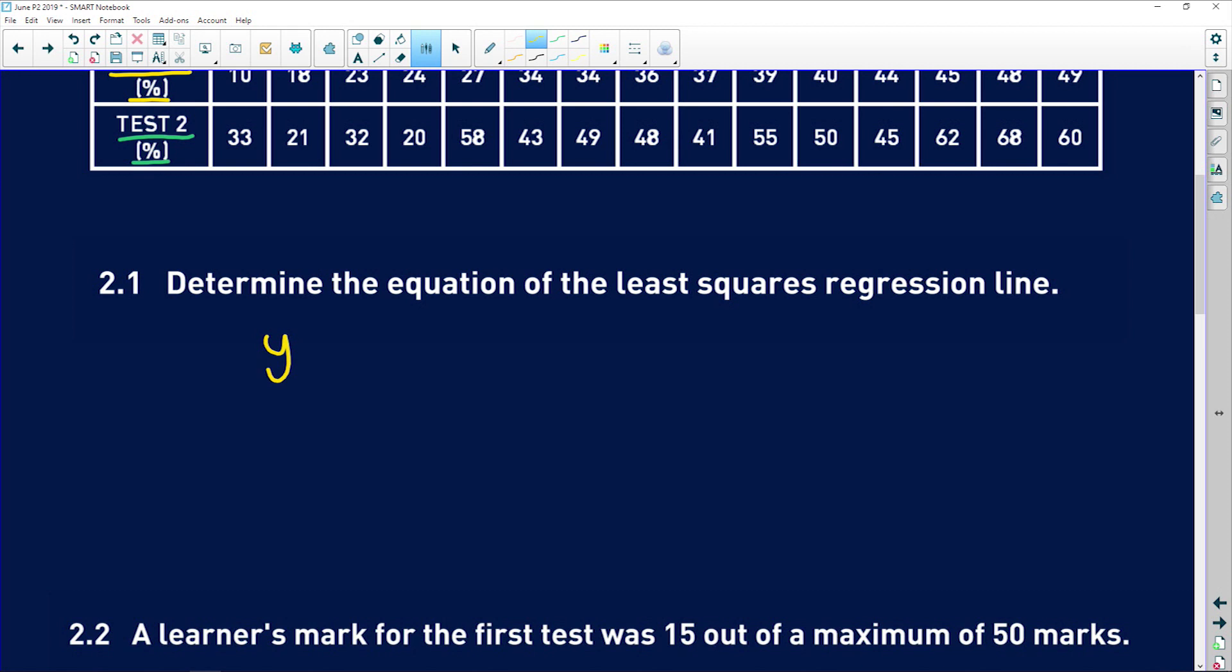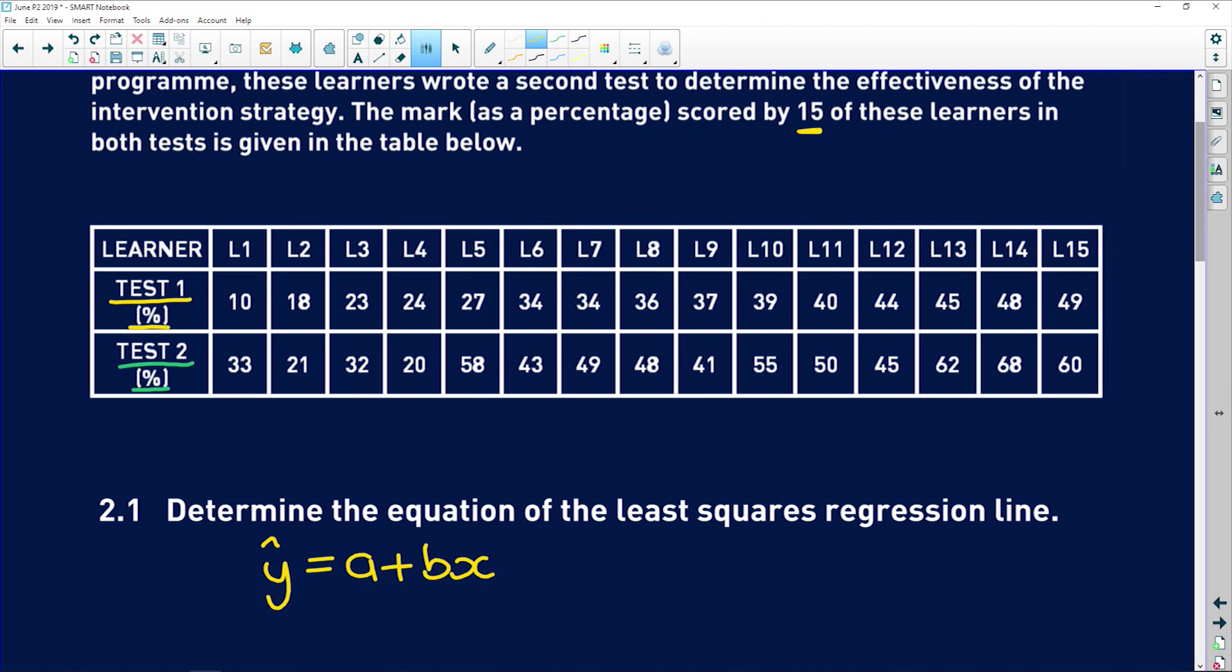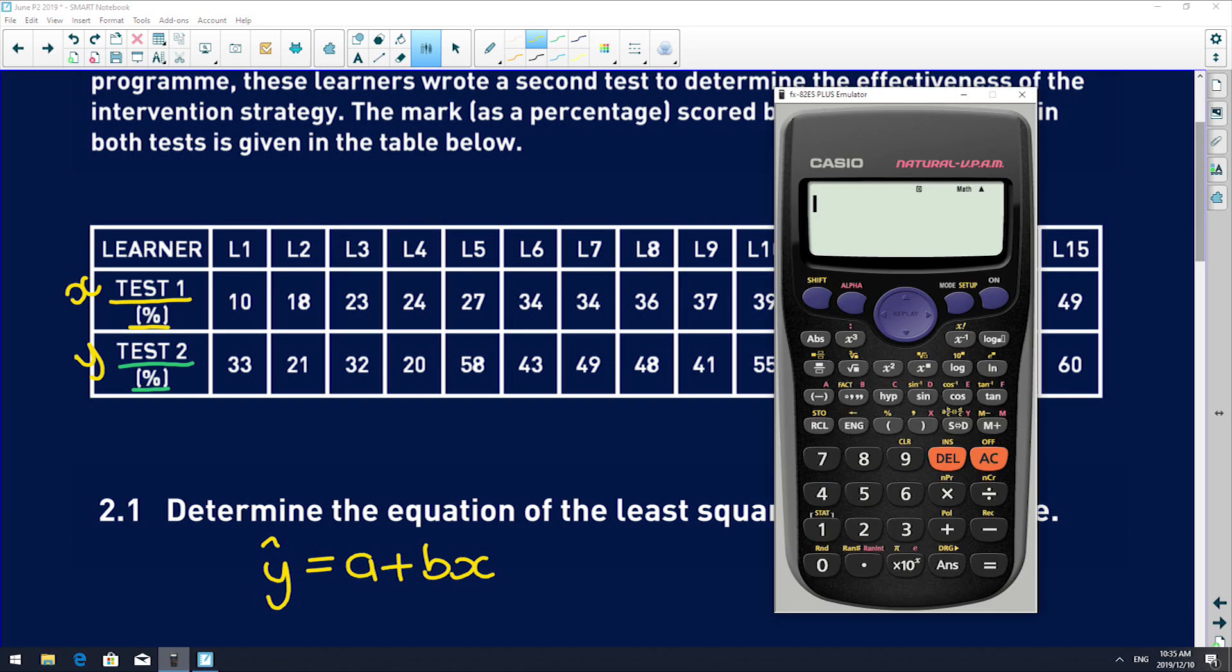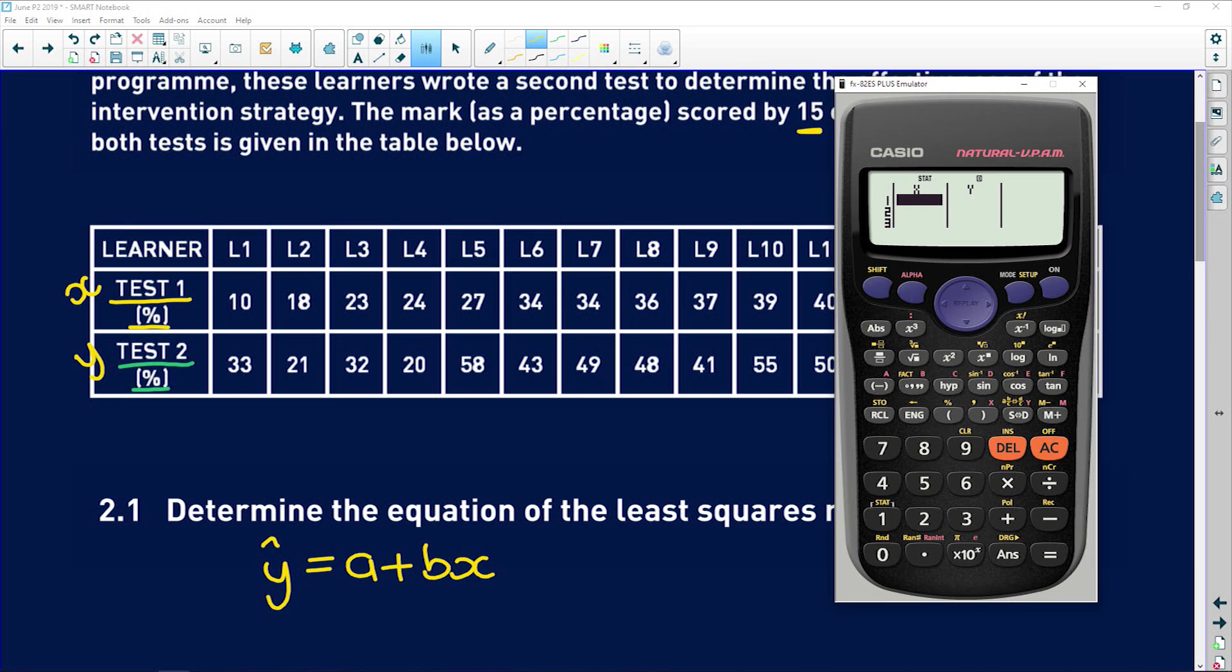Now remember guys, that is given to us as the predicted y value is equal to a plus bx. So now I'm going to show you how to do this on the calculator. First, we need to assign variables. So I'm going to say that test one is x, and test two is y. So what you do is you pull up your calculator, you say mode setup, two for stats, and now because we're dealing with the y equals a plus bx, you'll see that at option two. So now we have two columns, x and y. So under the x column, you will enter all of the marks for test one.